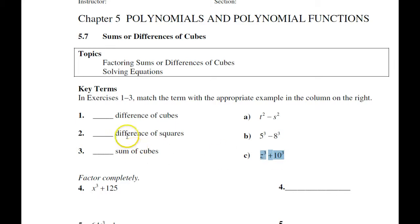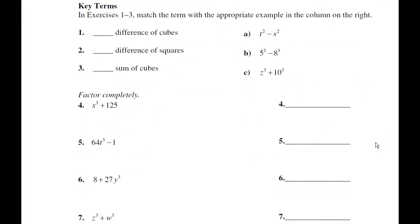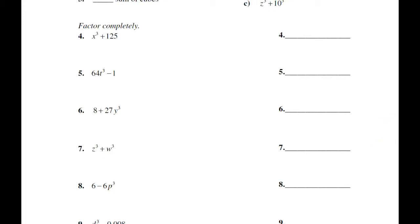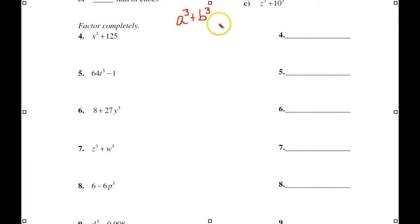Next, I'll go through the recipe for factoring the sum and difference of perfect cubes. The recipe is very similar for both. Basically, it starts with making a parenthesis for two terms and a parenthesis for three terms. Then you look at this sign right here, and this sign goes there.